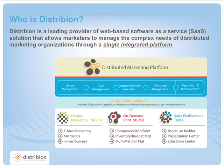On the lower level, we have the core functions. Online marketing studio, which consists of email marketing, microsites and landing pages, forms and surveys. Also, on-demand print studio, which consists of commerce storefront, inventory budget management, multi-vendor management, and last but not least, sales enablement tools, which consists of a brochure builder, presentation center, and education center.